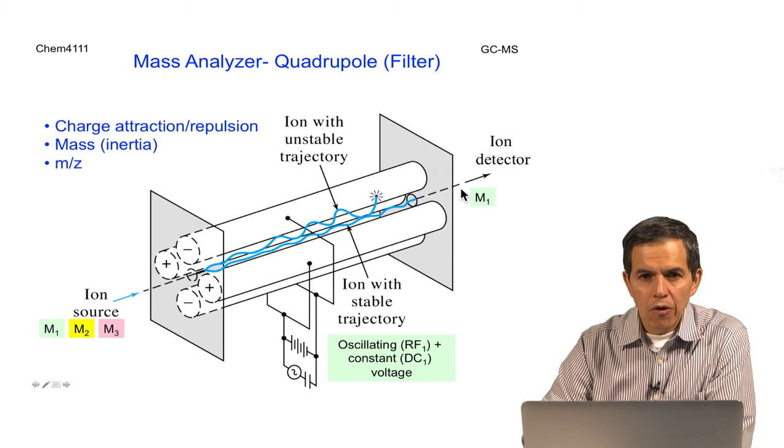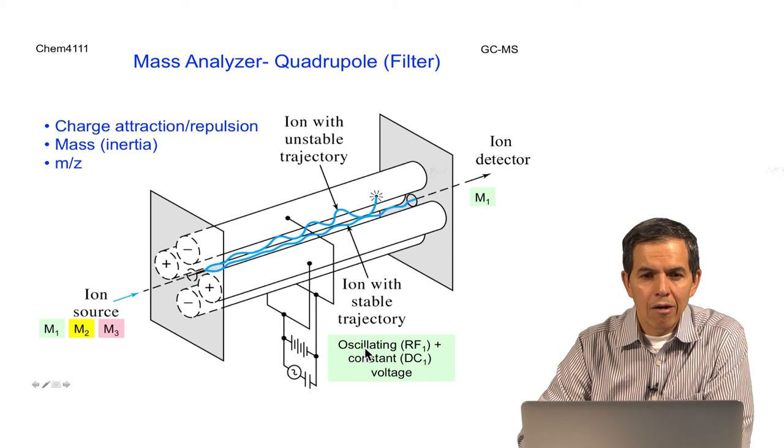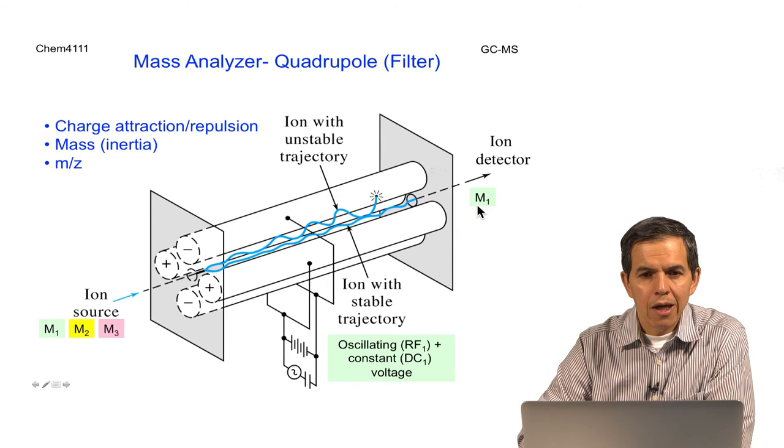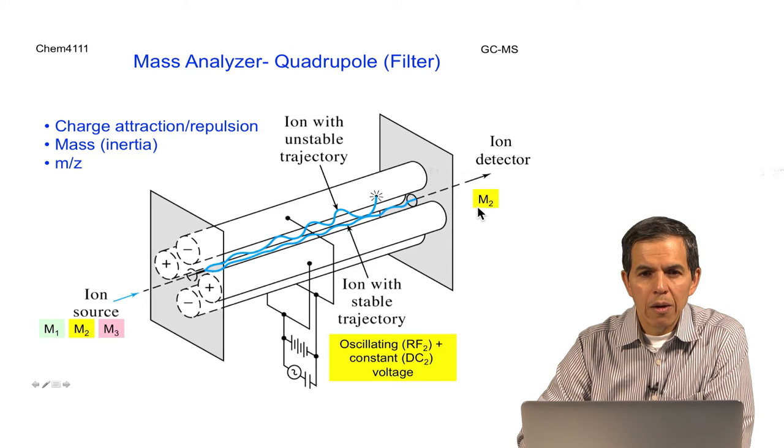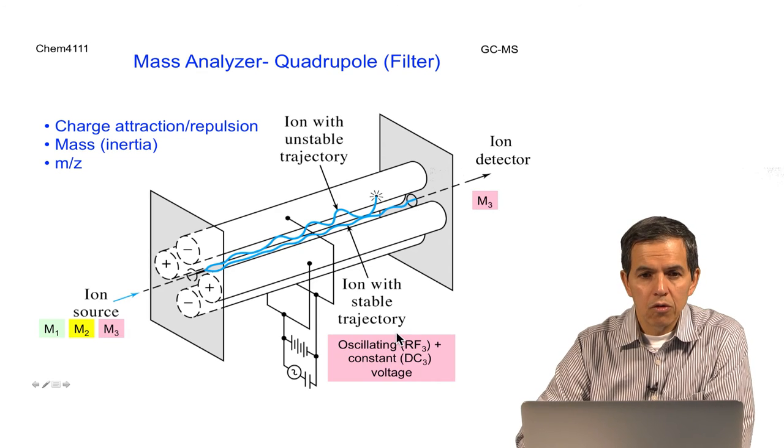However, some ions might be able to make it all the way through the quadrupole system towards the ion detector zone. If we have a correct selection of the RF and DC voltages, we might be able to select ion M1. Similarly, if we select different voltages RF2 and DC2, we might be able to select ion M2. If we change the voltage to RF3 and DC3, we might select ion M3.